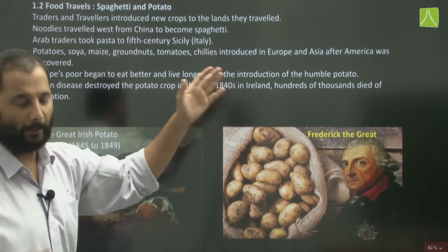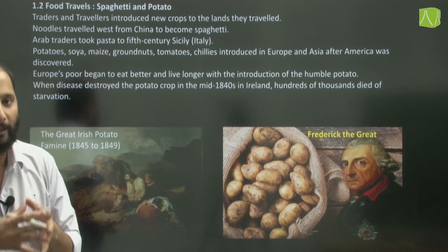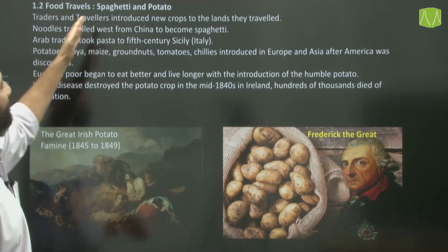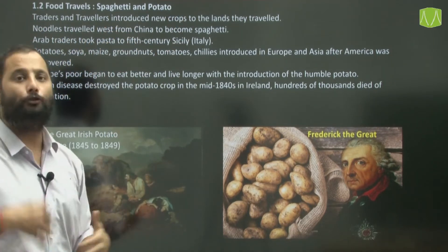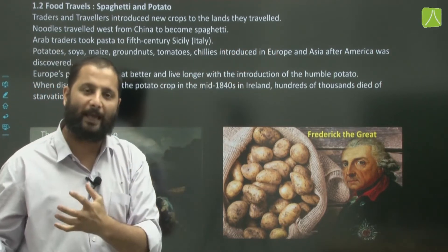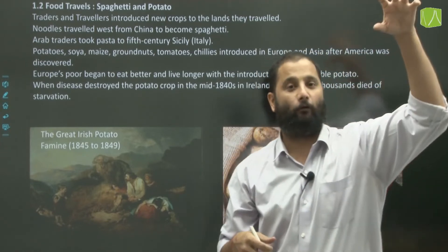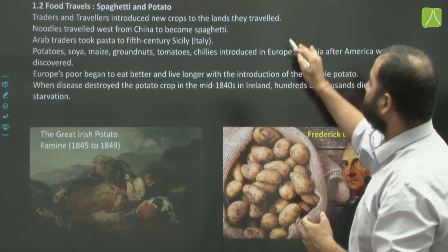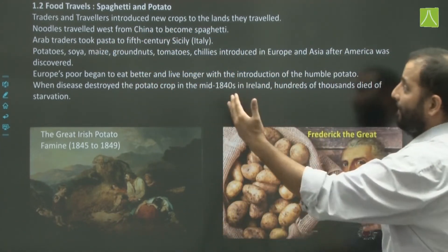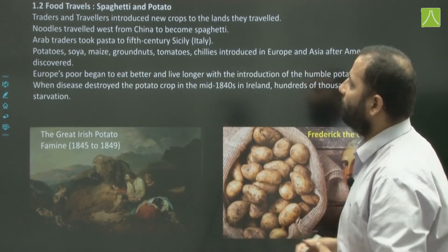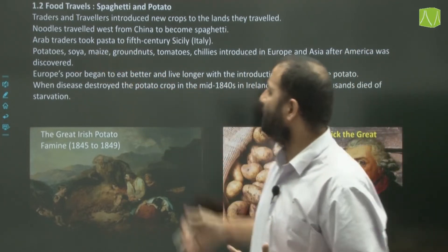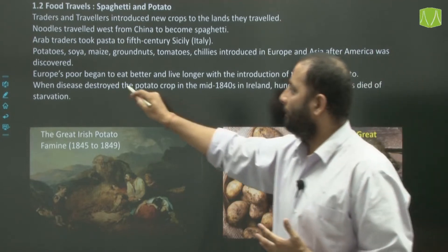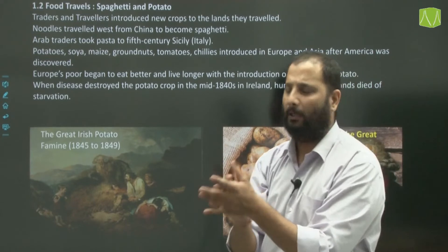Food also traveled and has a history. Many foods we eat today were not grown here centuries earlier — they came from somewhere else. Traders and travelers introduced new crops to the lands they visited. Noodles traveled west from China and became spaghetti. Arab traders probably took pasta to fifth-century Sicily. Potatoes, soya, maize, groundnuts, tomatoes, and chillies were all introduced to Europe and Asia after America was discovered — they were actually grown in America, referring to both North and South America and the Caribbean.